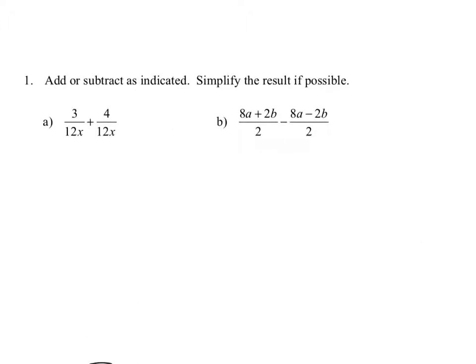Whenever you're adding fractions, you must get a common denominator. For example, if you have a fraction a over b plus c over b, you can add those together because they have a common denominator. When that happens, you add the numerators together to get a plus c all divided by b.